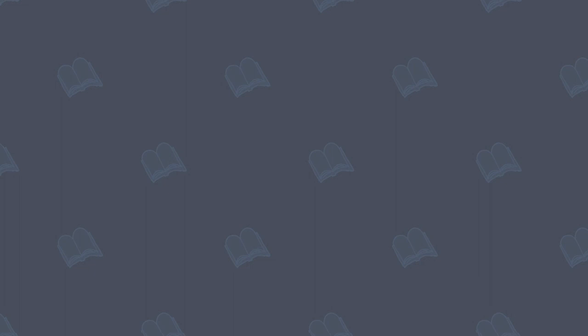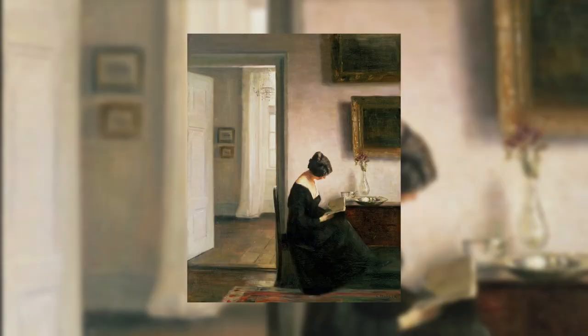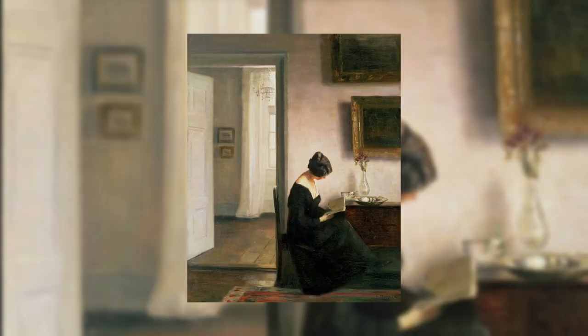31. Northanger Abbey. Northanger Abbey is a novel by the English writer Jane Austen, which satirizes the Gothic novel. In the book, the protagonist is a young woman who, inspired by the Gothic novels she has read, imagines gloomy and mysterious scenarios during her visit to a friend's farm.